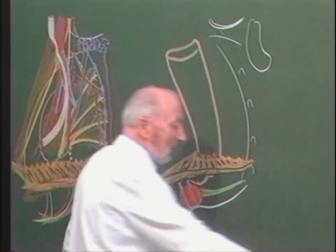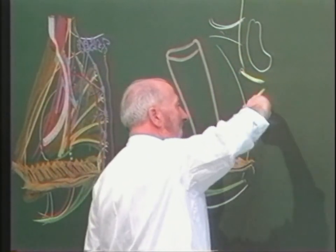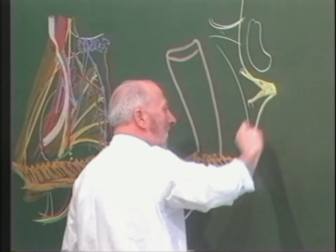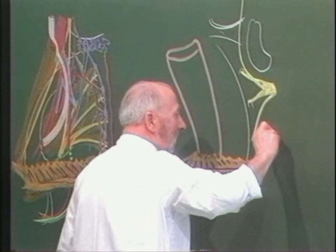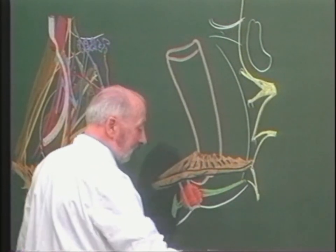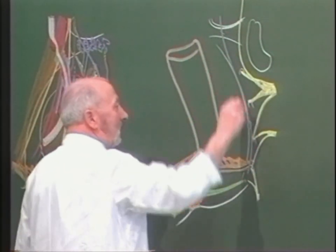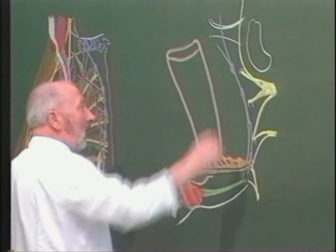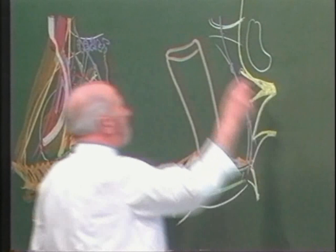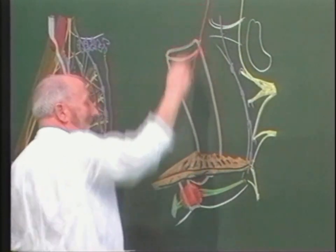Sur ce dessin, on rappelle également les racines nerveuses : le tronc lombosacré avec les racines S1, S2 et S3 qui vont constituer le grand nerf sciatique, rabattu vers le dehors. À partir des racines S3 et S4, le nerf pudendal ; en dessous, S5 et les racines coccygiennes avec le nerf anal postérieur de Moresta. Sur le côté, la chaîne orthosympathique latéro-vertébrale avec ses renflements ganglionnaires. Nous allons maintenant mettre en place l'arrivée de l'artère rectale supérieure pour expliquer ce qu'est le véritable mésorectum au sens morphogénétique et anatomique du terme.